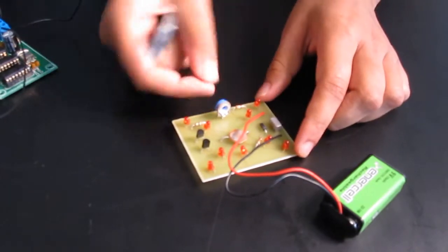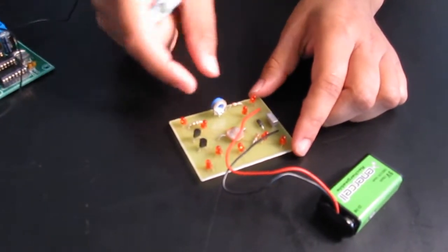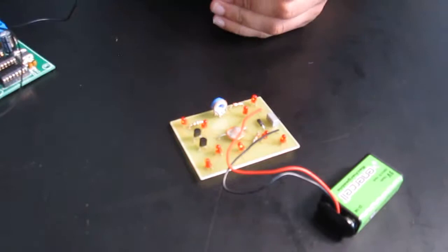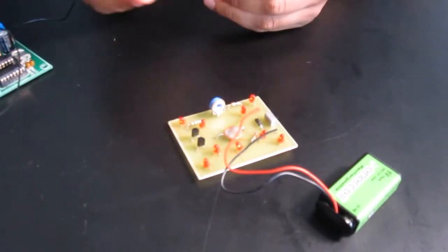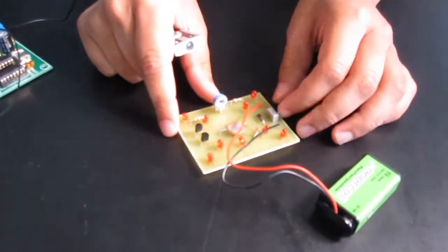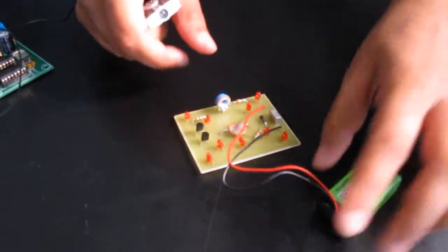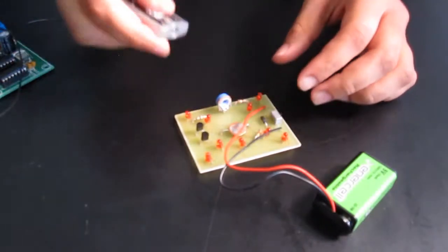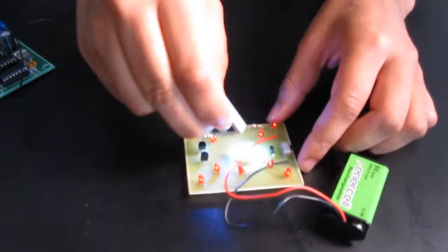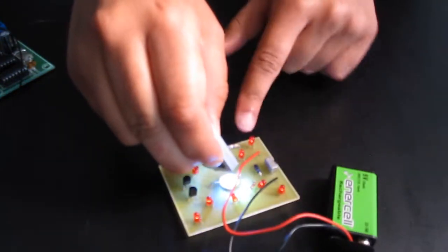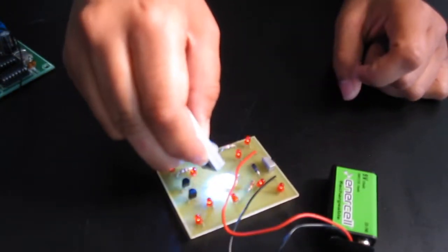There's also a potentiometer, which will increase or decrease resistance, so it'll increase or decrease the light of the LEDs. So that's how it works. And then if I shine my laser here, you can tell that the LEDs are lighting up. So that's it.